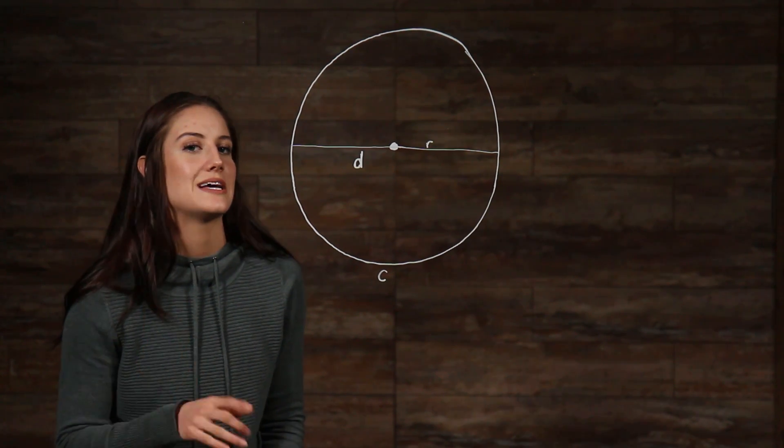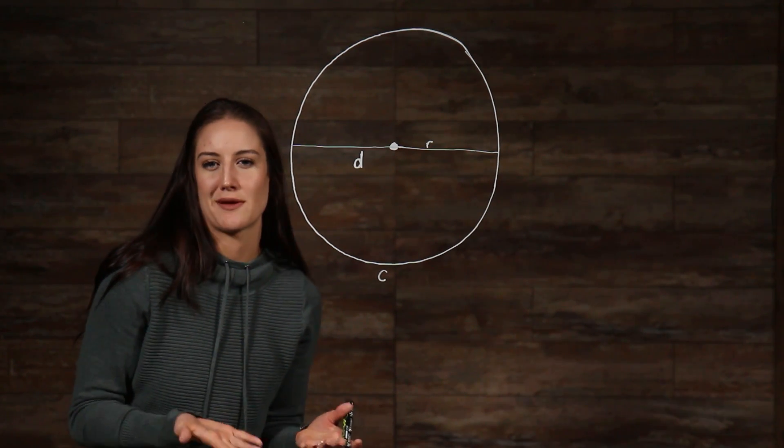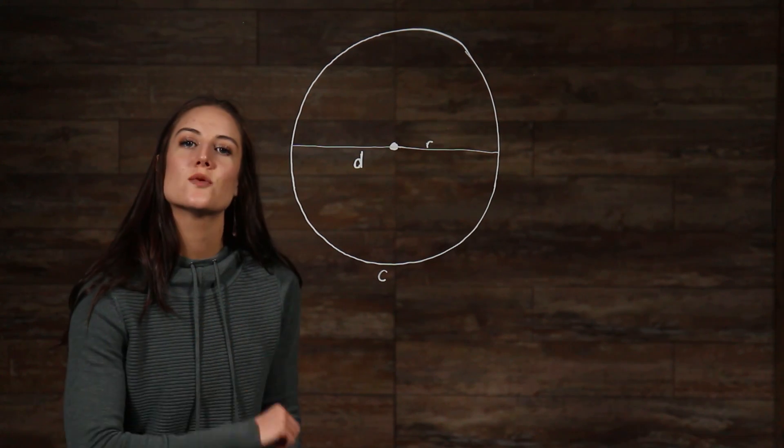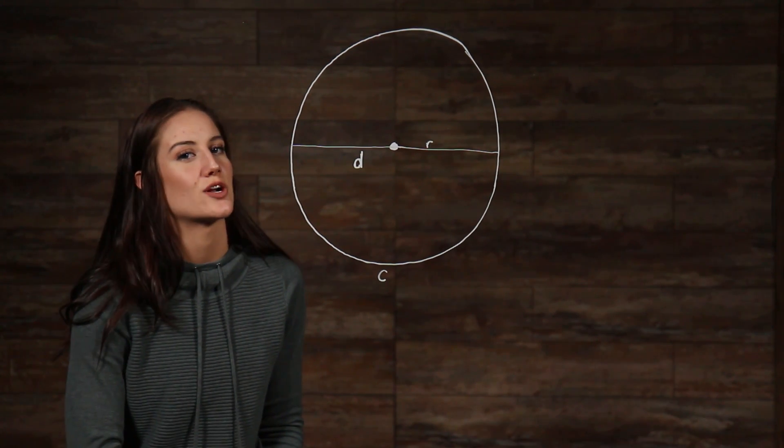However, since a circle has a continuous curve, we use the word circumference rather than perimeter to distinguish it. Now that we've looked at what radius, diameter, and circumference are, let's look at how to calculate each one.